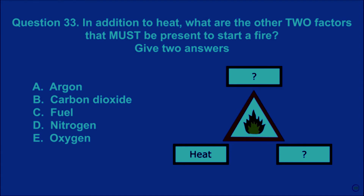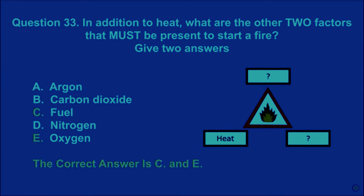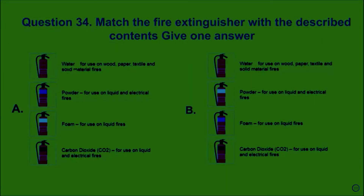Question 33: In addition to heat, what are the other two factors that must be present to start a fire? Give two answers. A: argon. B: carbon dioxide. C: fuel. D: nitrogen. E: oxygen. The correct answer is C and E.